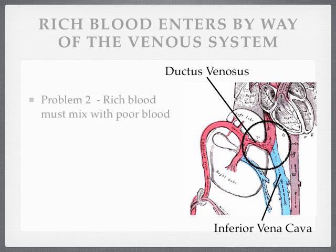And this presents a second problem: that rich umbilical blood is going to mix with the poor, deoxygenated blood of the inferior vena cava. It cannot be avoided. Since we are traveling through the systemic veins of the human body, which normally carry deoxygenated blood, this rich blood has to mix with it. We are not going to be able to preserve the full richness of that umbilical blood as we travel through the venous system.